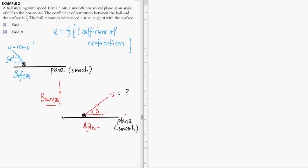In this oblique collision problem, we are given a ball that is colliding with a smooth plane at an angle of 60 degrees to the horizontal. The ball is moving at 10 meters per second towards the plane at that angle, and the coefficient of restitution is given as 1/3. After the collision, the ball bounces off the surface at an angle beta to the horizontal.